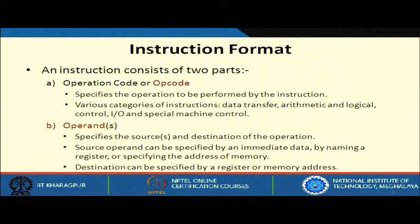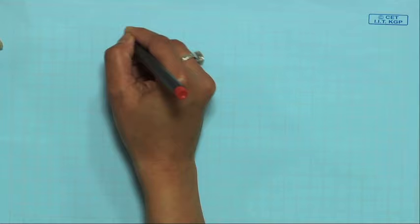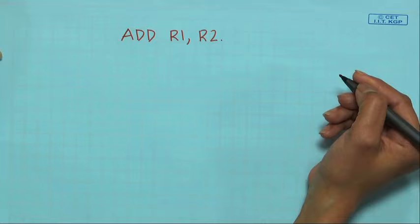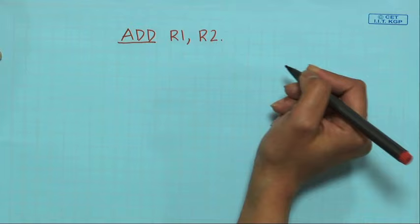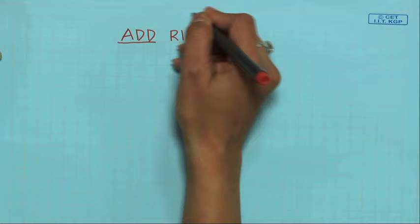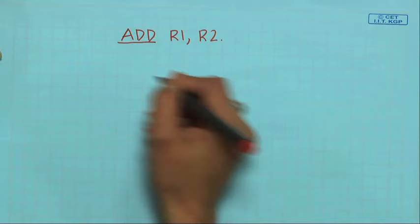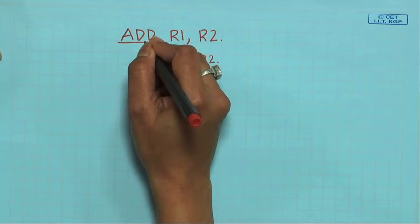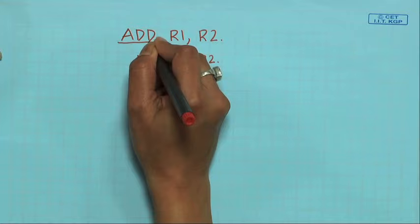The opcode specifies the operation to be performed. For example, in the instruction 'ADD R1, R2', the operation is adding two register values. R1 will store R1 plus R2. ADD is the operation code that specifies the operation to be performed by the instruction. We can have various categories of instructions.